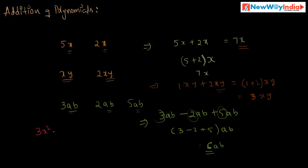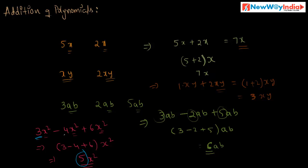Consider another example: 3x² minus 4x² plus 6x². These are all like terms because they have the same literal factor x². First, add the numerical coefficients: 3 minus 4 plus 6. The literal factor is x². The coefficient is 3 minus 4, which is minus 1, plus 6 equals 5x². So the coefficient is 5, which is the sum of the numerical coefficients of the given terms. This is addition of like terms.